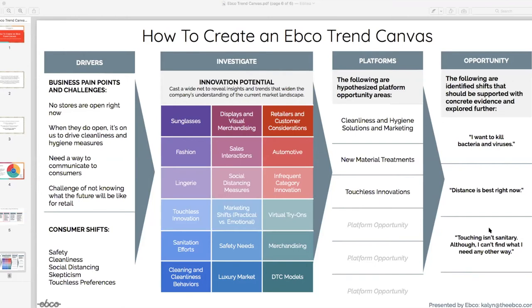We also looked at touchless preferences and innovation. In terms of trends, we examined what's happening in other categories — virtual try-ons, direct-to-consumer models, and new hygiene measures that retailers will need to enact when they start to open. The hypothesized platform areas that came out of this include cleanliness and hygiene solutions and marketing, new material treatments for glass surfaces, counters, or the jewelry themselves, and ways to think about cleaning products between usage, as well as new touchless innovations in service models with limited interaction with sales associates.